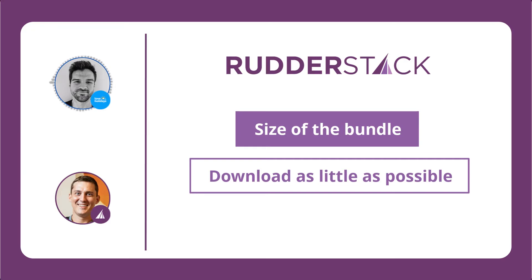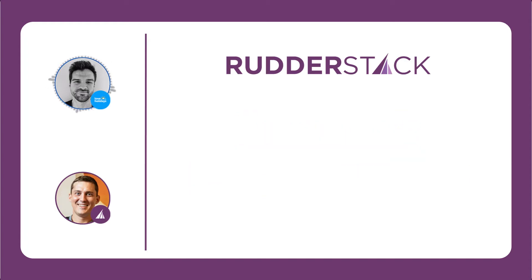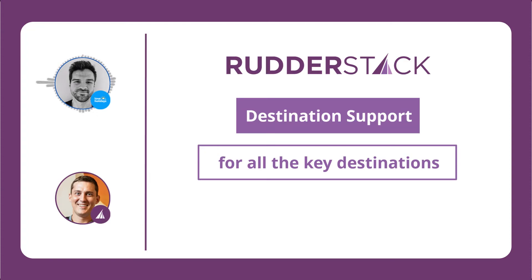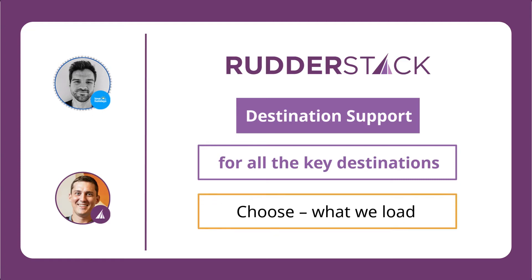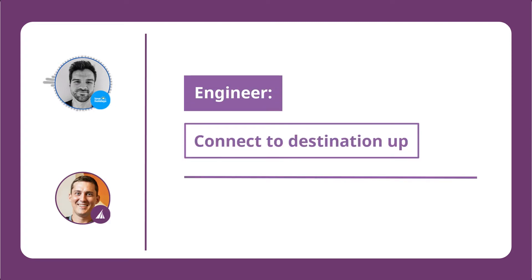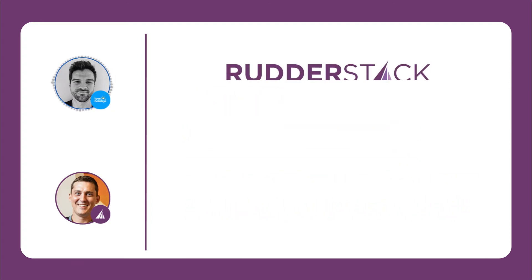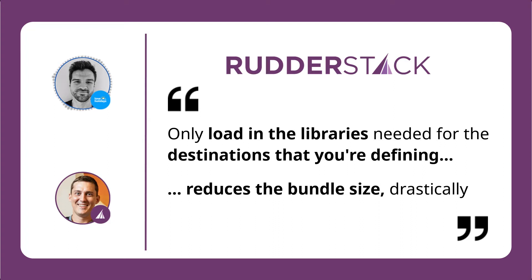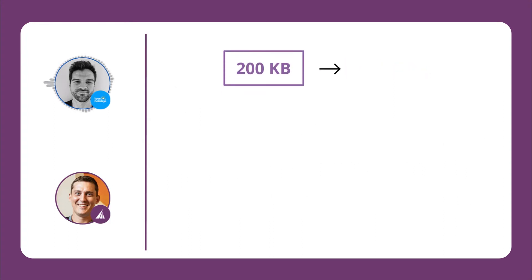RudderStack had built out destination support for all of the key destinations, but we were still loading all of that for everybody. With that context, we realized we could just choose what we load in. Most companies have some control over their code, so you want an engineer to connect a destination explicitly. RudderStack moved towards a model where it only loads the libraries needed for the destinations you're defining, which reduced the bundle size drastically — something like 200 kilobytes down to 60 kilobytes, which was a huge win.